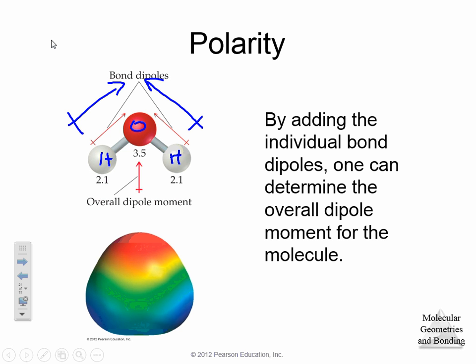Those two arrows do not cancel each other out. If they were to cancel each other out, we would get what we call a non-polar molecule because they cancel out. However, they don't cancel out. They create a net bond that looks like that. We know that water is polar.